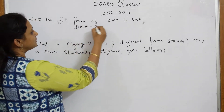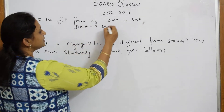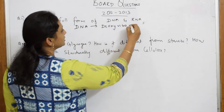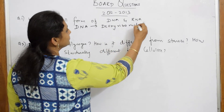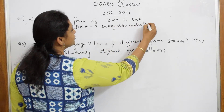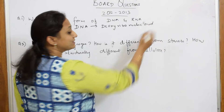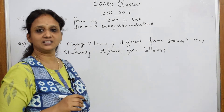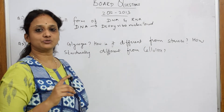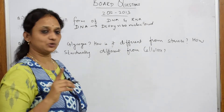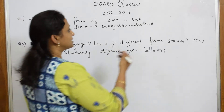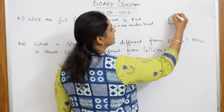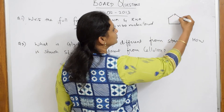DNA we very well know is deoxyribonucleic acid. If you still want to write the structure, I have already given the structure for DNA, where I have shown you the pentose sugar. So let us write the structure for DNA — it is your pentose sugar.